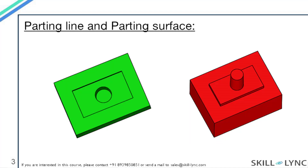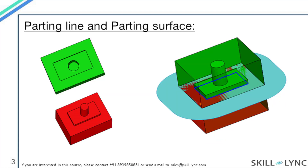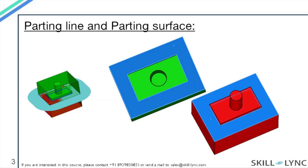The portion of the mold block below the blue surface will form the core. Here I have an image showing the core and the cavity for the part. And during the injection molding process, these two blocks will come into contact with each other. So the surface where these two blocks are touching each other, which is displayed by the highlighted blue surface, is the parting surface for the mold.